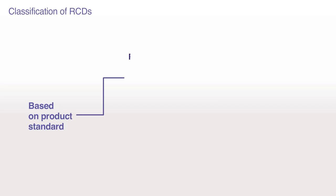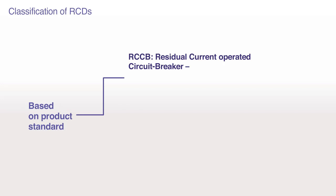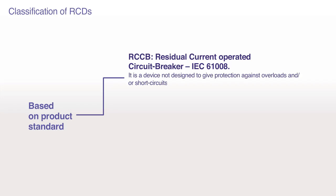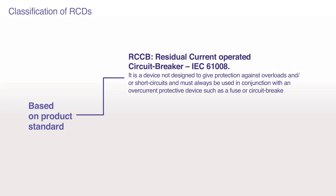Classification of RCDs based on product standard. RCCB — Residual Current Operated Circuit Breaker, IEC 61008. It is a device not designed to give protection against overloads and/or short circuits and must always be used in conjunction with an overcurrent protective device such as a fuse or circuit breaker in order to have complete protection.